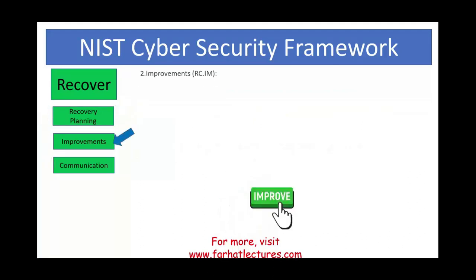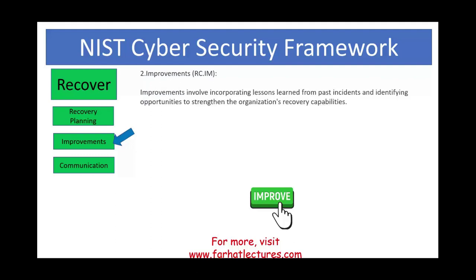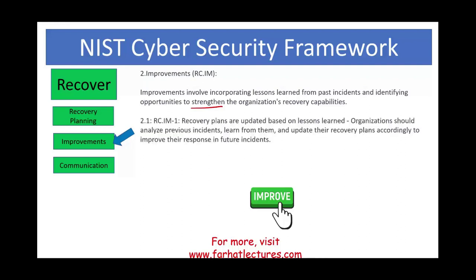The second category is improvement. You're going to incorporate lessons learned from past incidents to identify opportunities to strengthen the organization's recovery capabilities. You have to re-update your recovery plan based on lessons learned, because the key of improvement is learning from the past to improve the future. Organizations should analyze previous incidents, learn from them, and update the recovery plan accordingly to improve responses to future incidents. Learn from your mistakes, learn from your vulnerabilities, and update your recovery plan.